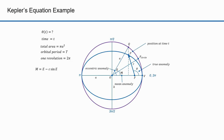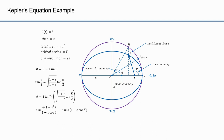Here is Kepler's equation — we use that to derive the eccentric anomaly E from M. Here's the equation for tan(theta/2), the formula for theta, and two formulas for R. Let's look at a real example.